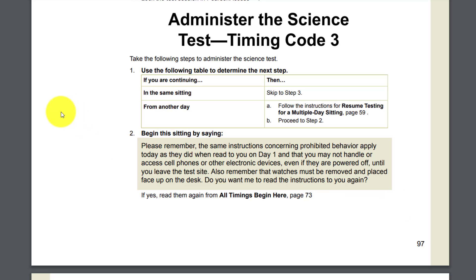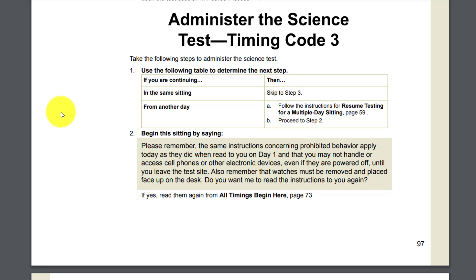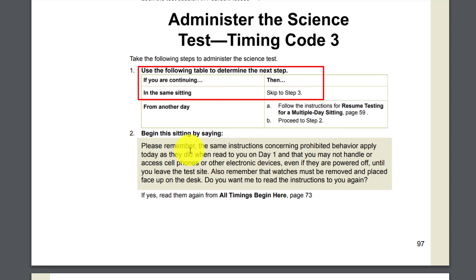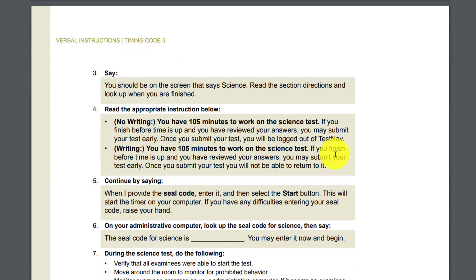If you're going to give the science test on the fourth day, instruct them to log out of TestNav. The examinee's screen should say 'Sign Out Complete' and the examinee status should be 'Exited.' Collect student authorization tickets and scratch paper, inform examinees of the date and time for the next day, and say: 'Remember, discussing or sharing test content or answers is prohibited, including on social media.' Dismiss examinees and lock the test if you're going to test science on the next day.